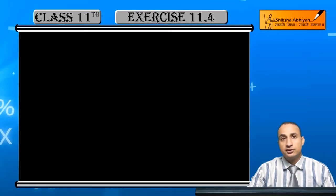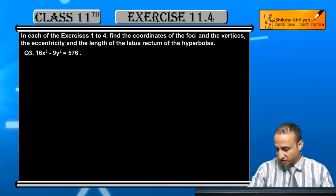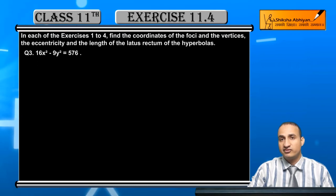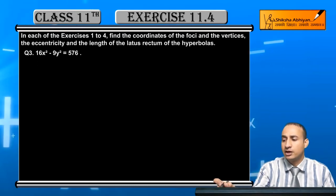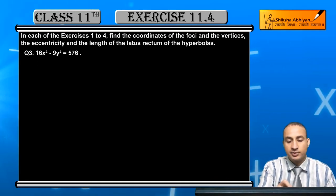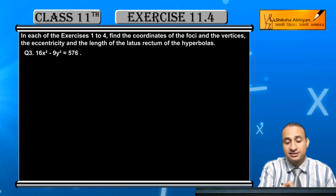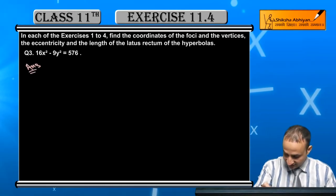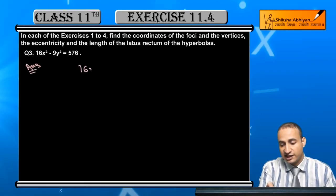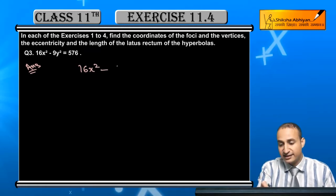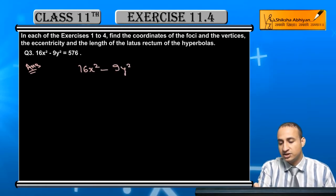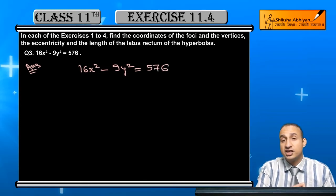Now student, question 3, in which we also give hyperbola. This is 16x² - 9y² = 576. I will first write down the equation that we have given here: 16x² - 9y² = 576.